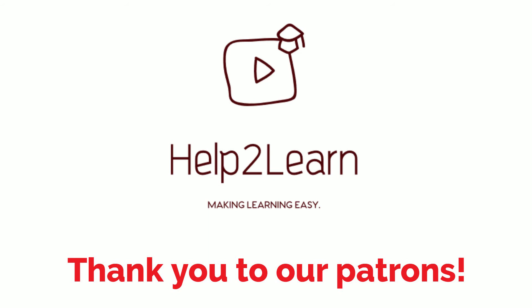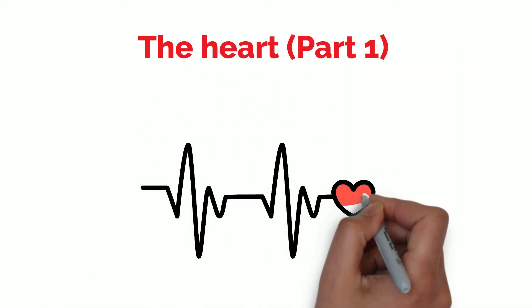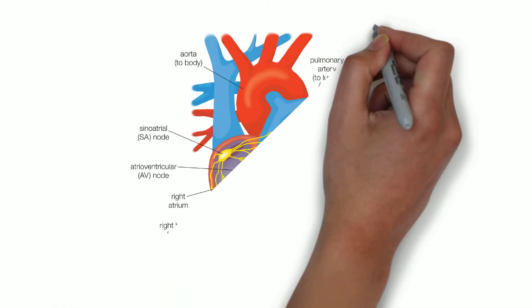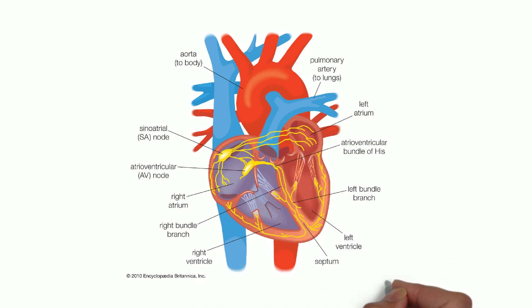Hi everyone, and welcome to another video on the human biology course. Today we are going to talk about the heart. Before anything else, we need to have a look at the anatomy of the heart in order to understand how it functions, and it is more complex than you probably think. So let's take a look at this diagram. I know that from looking at it, it looks quite confusing, but let's split it into parts.